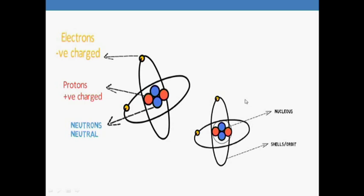An atom is comprised of a nucleus and shells. The nucleus of an atom has protons and neutrons.